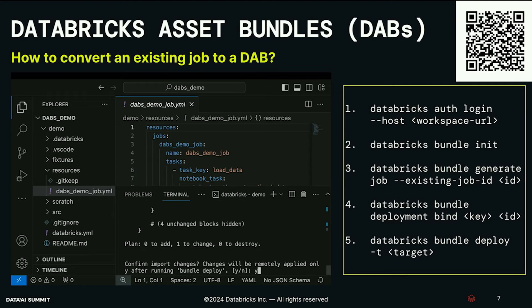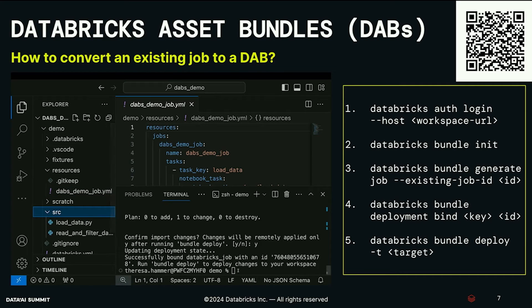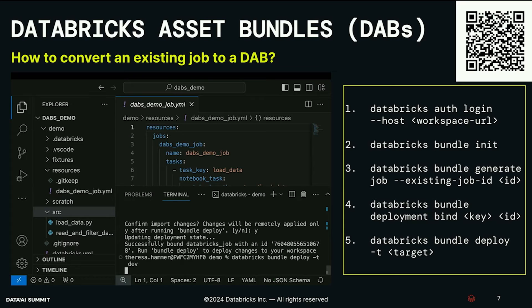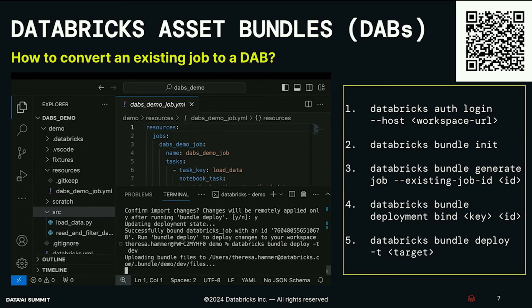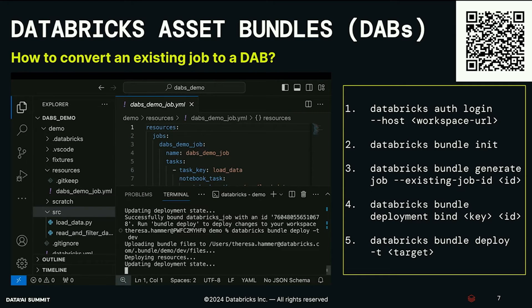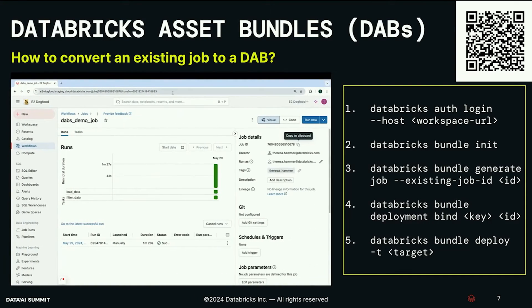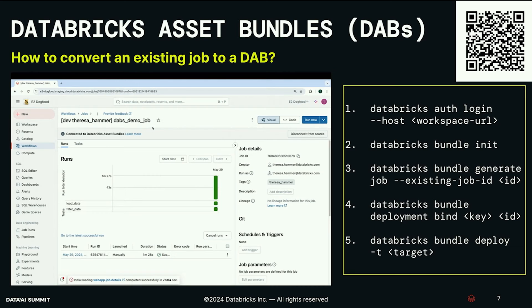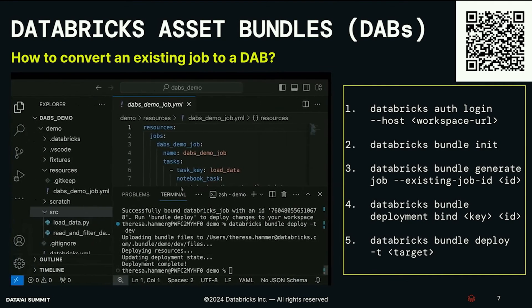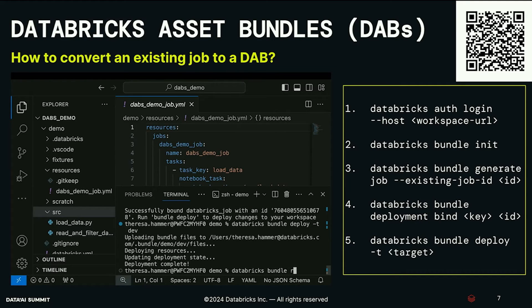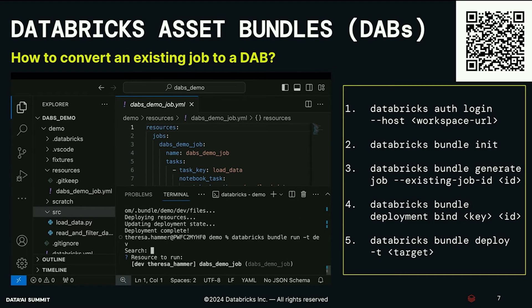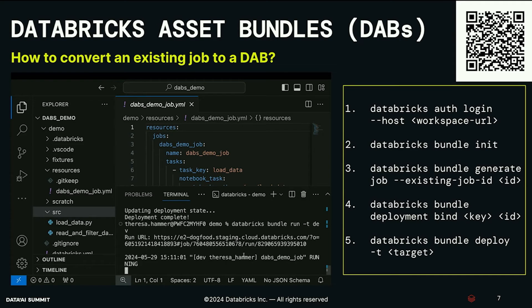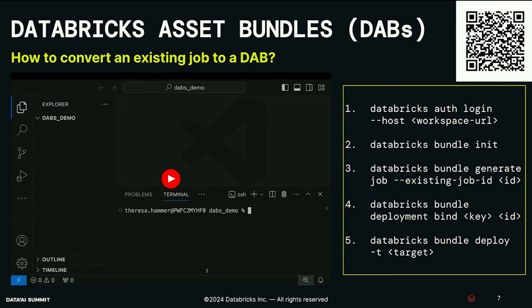Next I use the bind command: `databricks bundle deployment bind` with the resource key — in my example, the job — and the job ID to link them together. This ensures that when I update the Databricks asset bundle, it will also be reflected in the workspace for that exact job. It shows me a diff between the two, I confirm it, and then I deploy by running `databricks bundle deploy` specifying my target, in this case dev. Once those changes take effect, you'll see in the workspace the job is renamed to indicate it's been deployed to the dev target.